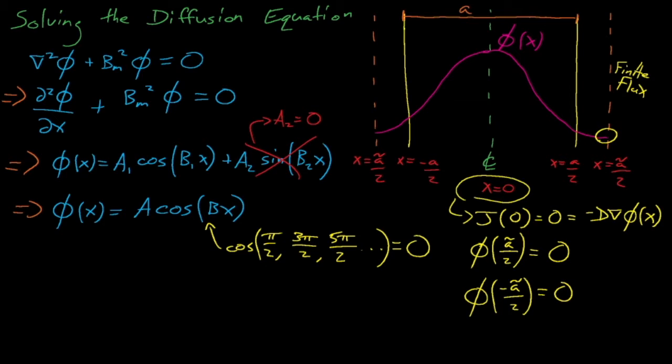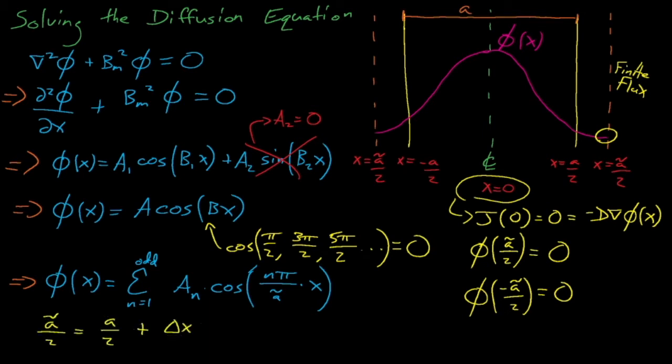Because n can be any odd number, this means that our flux can actually be represented by this infinite sum of fluxes. So how do we know at what point we should assume that the flux equals zero? How far outside of the slab do we need to extrapolate? Turns out that we can find this extrapolation distance through the use of vacuum boundary conditions.